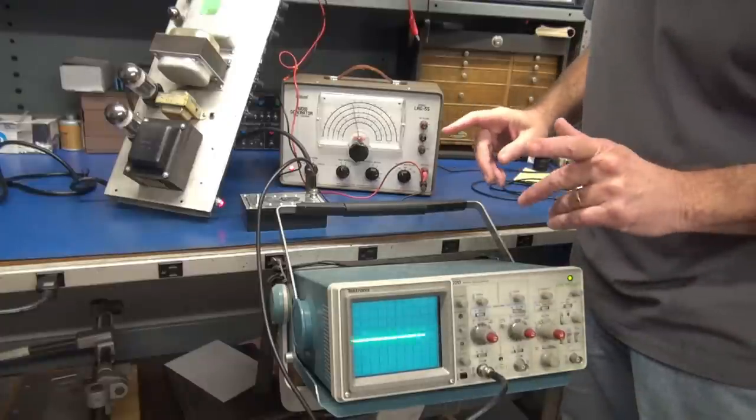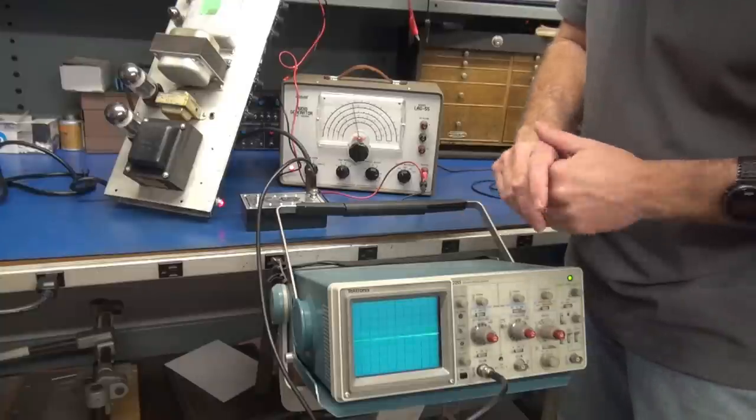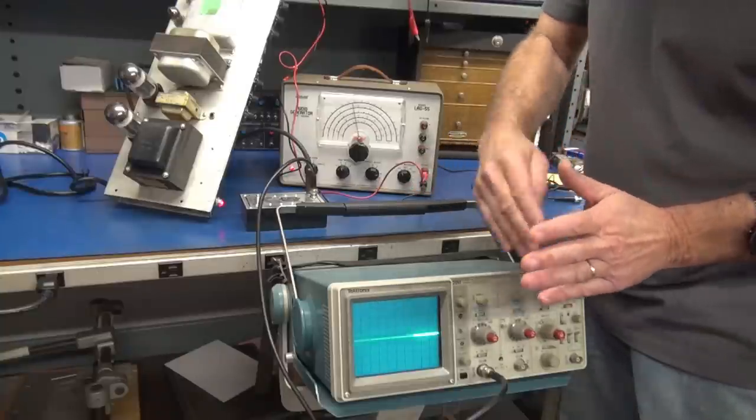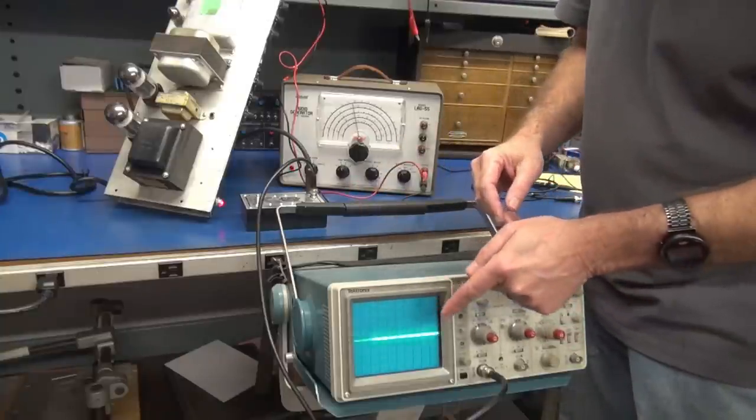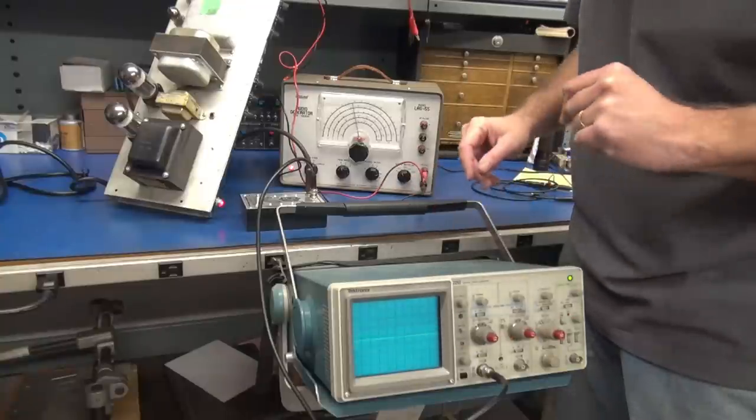So at this point, it could be the output tubes. If an output tube is not able to provide enough current to reproduce that sine wave, you would get distortion on either the upper or lower side of the sine wave. So let's check the tubes.